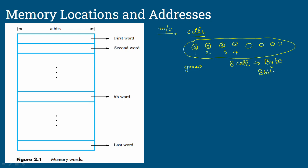One byte is one address in RAM or memory — each byte has a specific address. For example, a random address could be 0100. Memory contains different bytes, and you can store data into a byte or read it back.